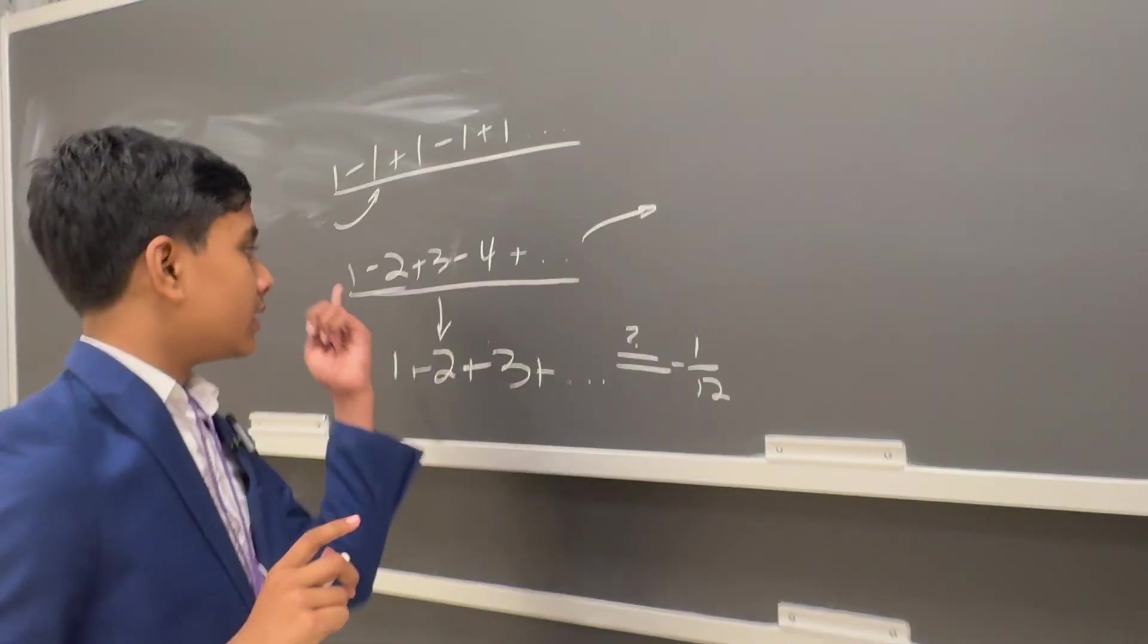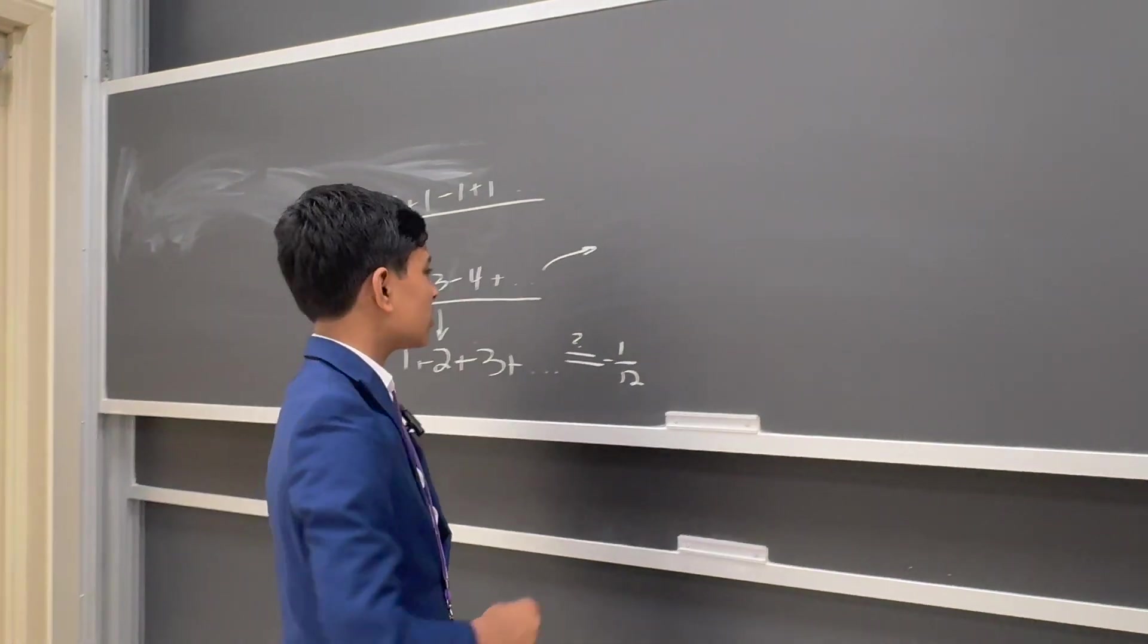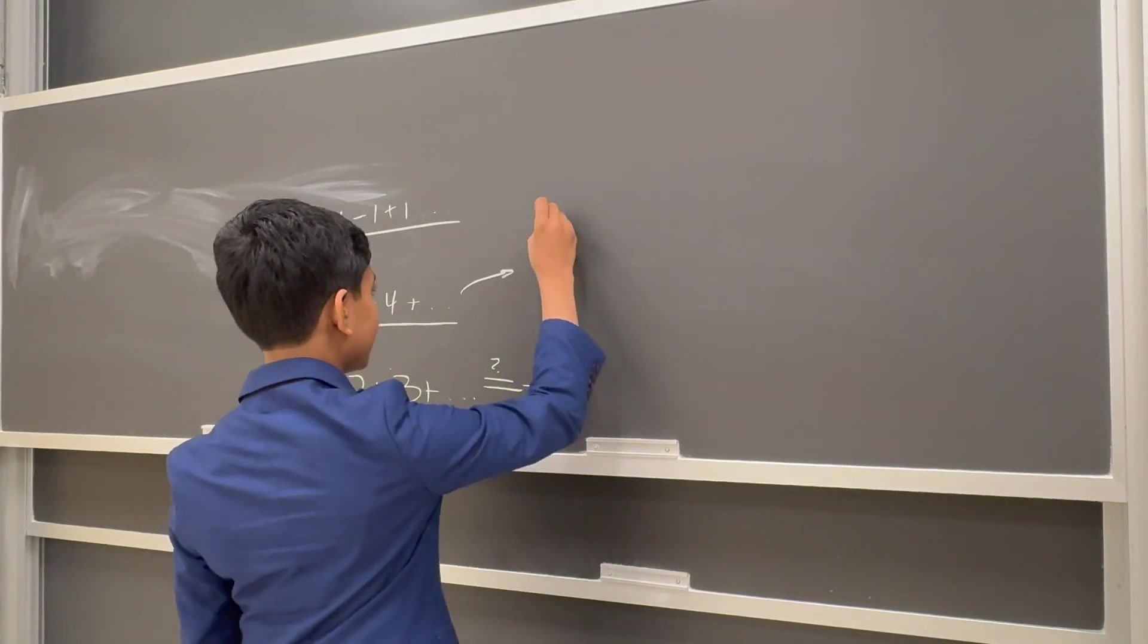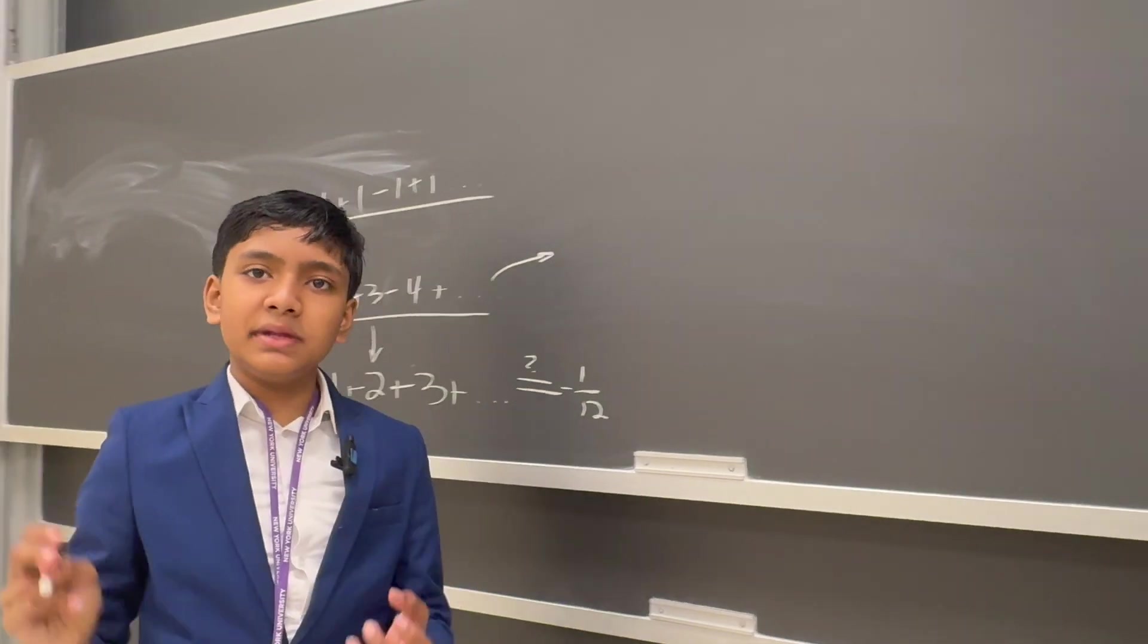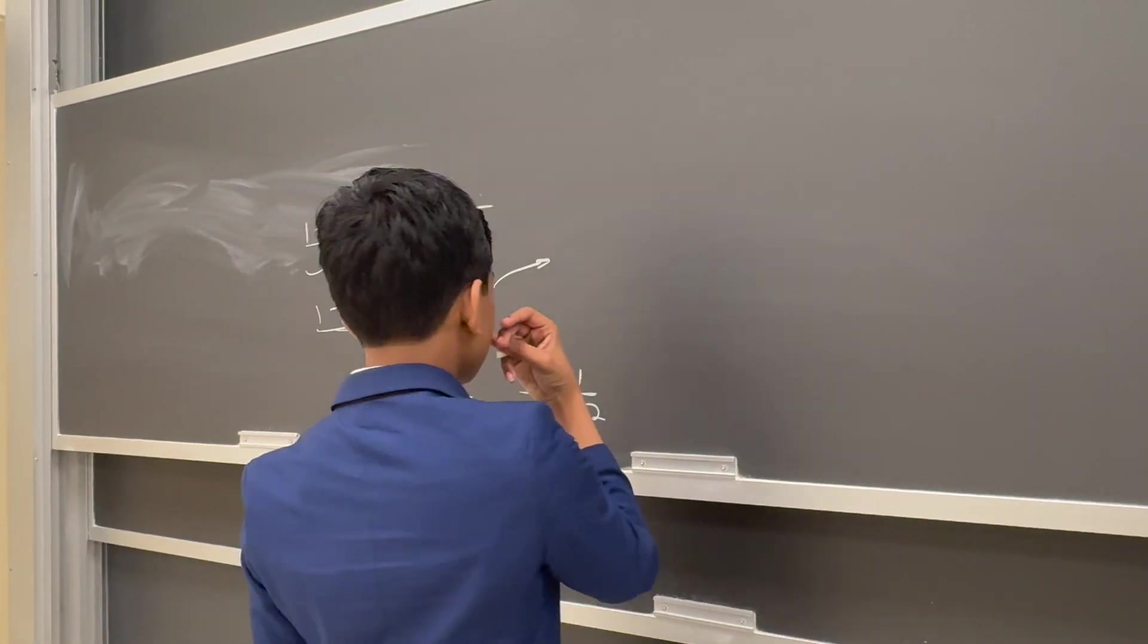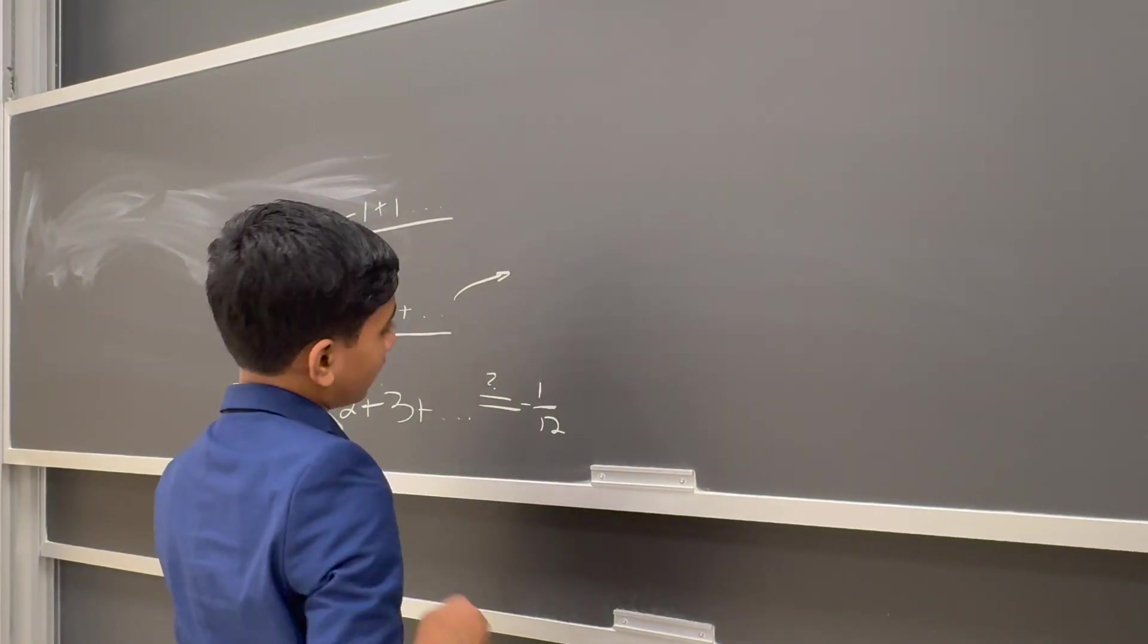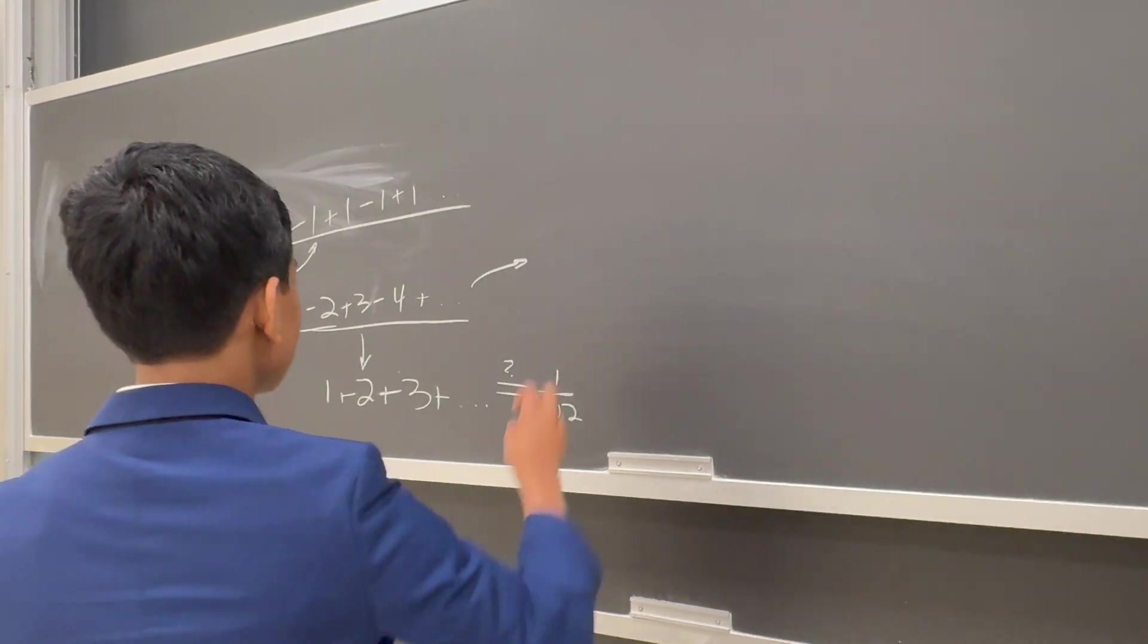So first of all, let's try Cesaro summing this sequence first. Cesaro summation is essentially taking the means of all the partial sums. So the sum of all the partial sums is what we first have to take.